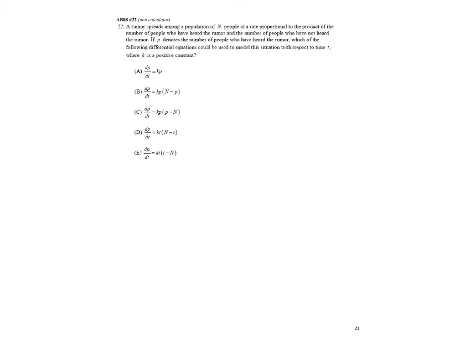Interesting question here. 2008, number 22, non-calculator. A rumor spreads among a population of n people at a rate proportional. Now, if they don't say direct or inverse, you can assume direct proportionality. To the product of the number of people who have heard the rumor and the number of people who have not heard the rumor. So total number of people, okay, number of people who have heard the rumor. p denotes the number of people who have heard the rumor. So P is equal to number of people who have heard. And N minus P will be equal to the number of people who haven't heard the rumor. Let's set up this differential equation.